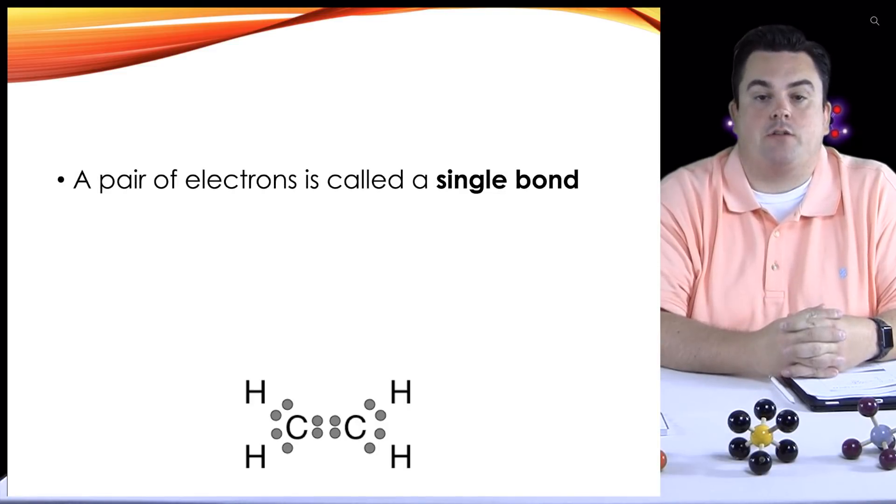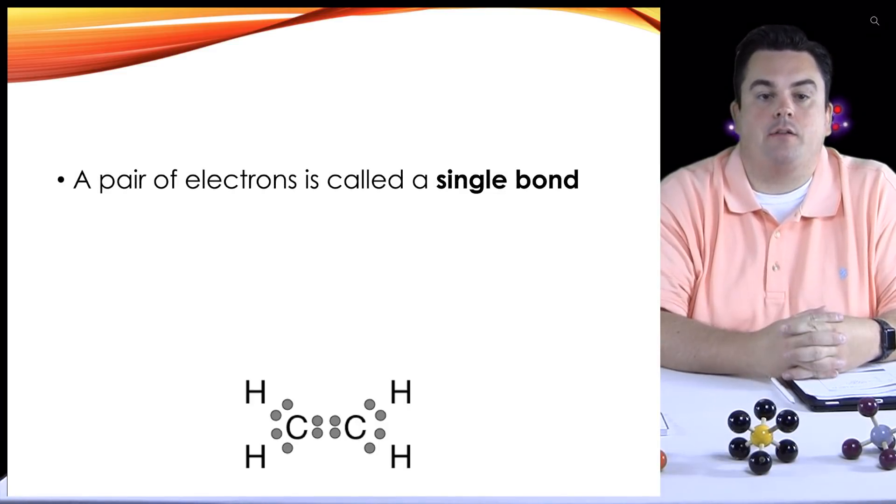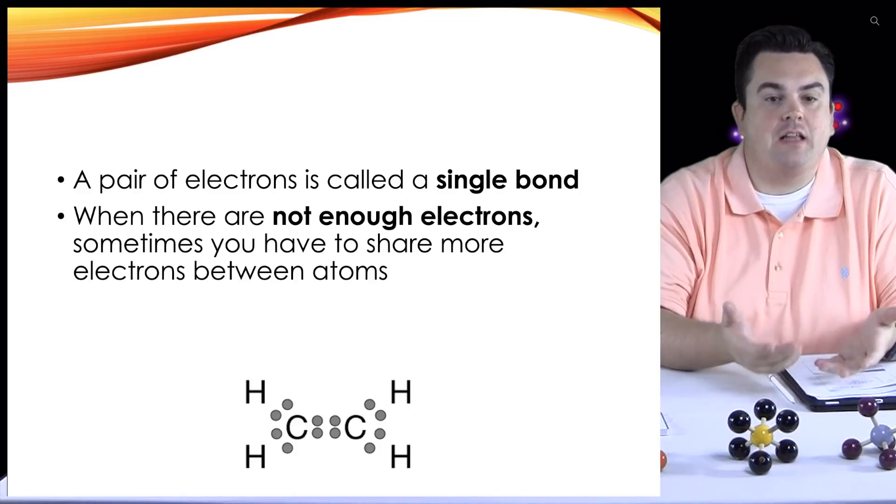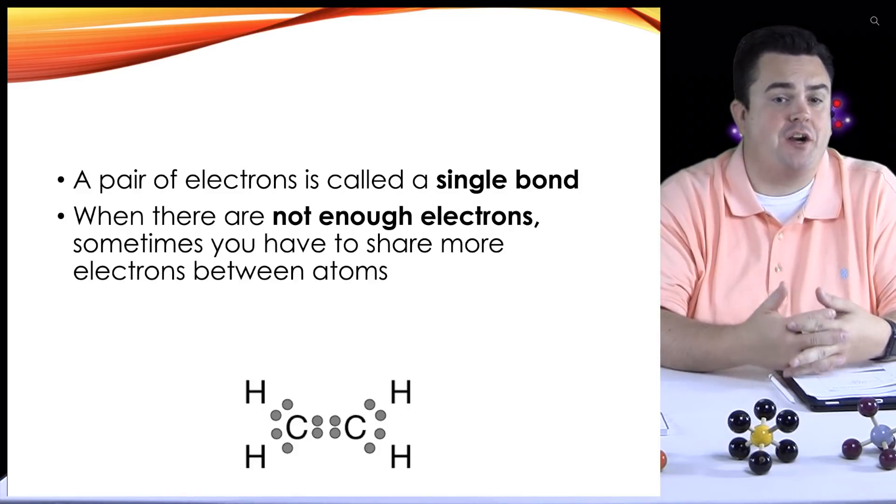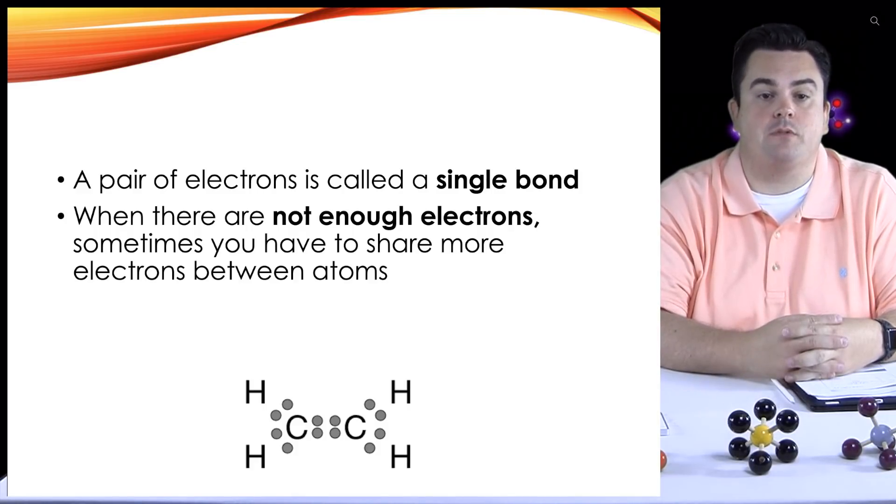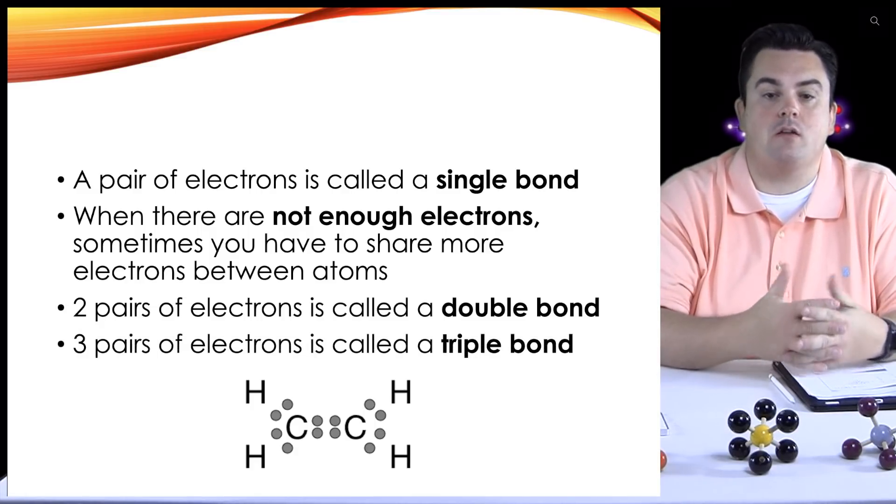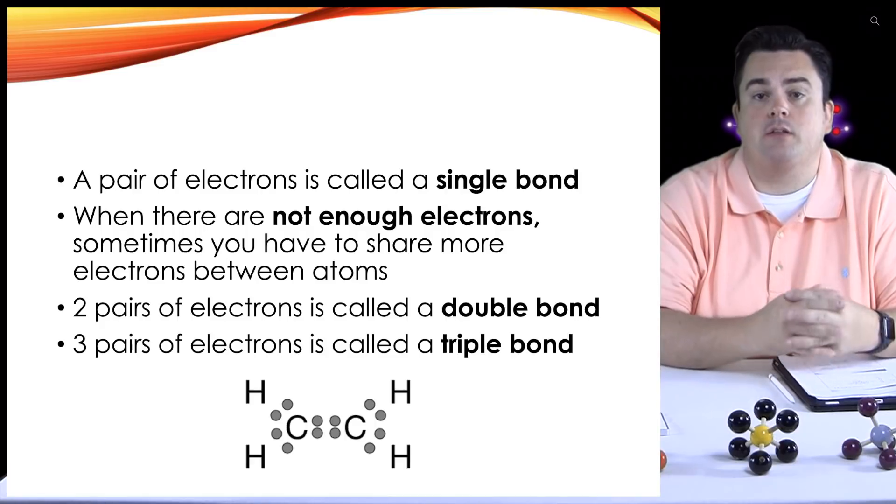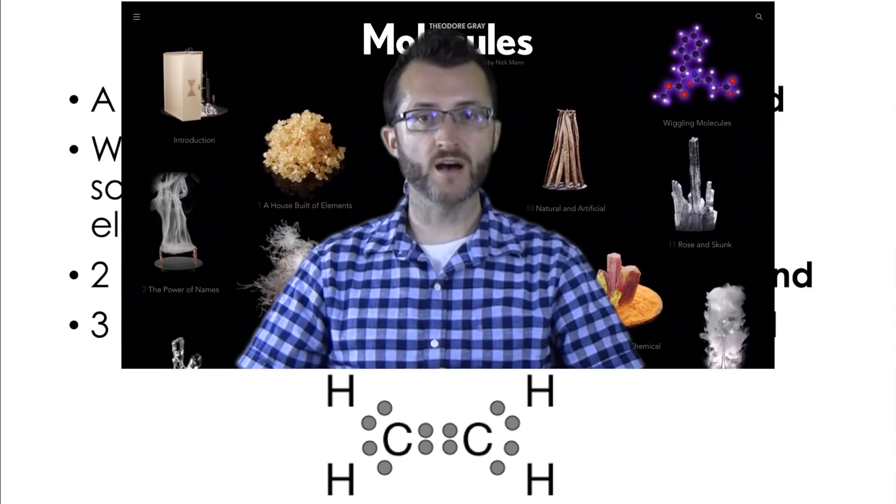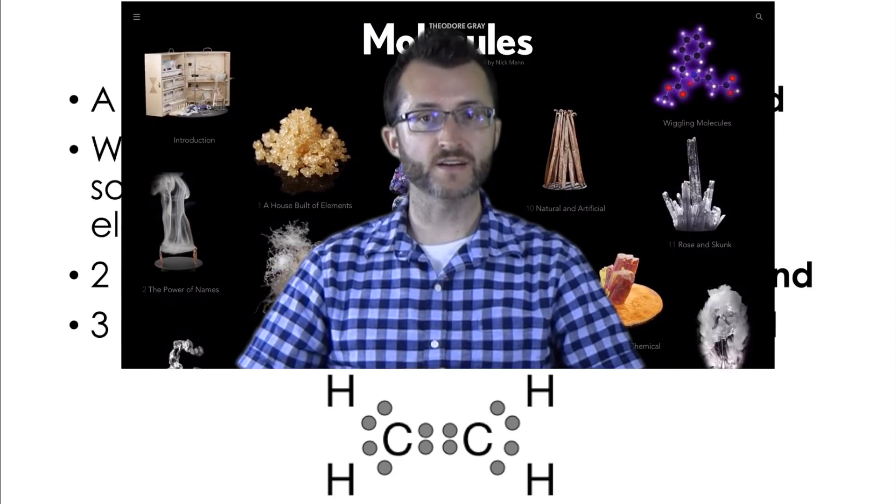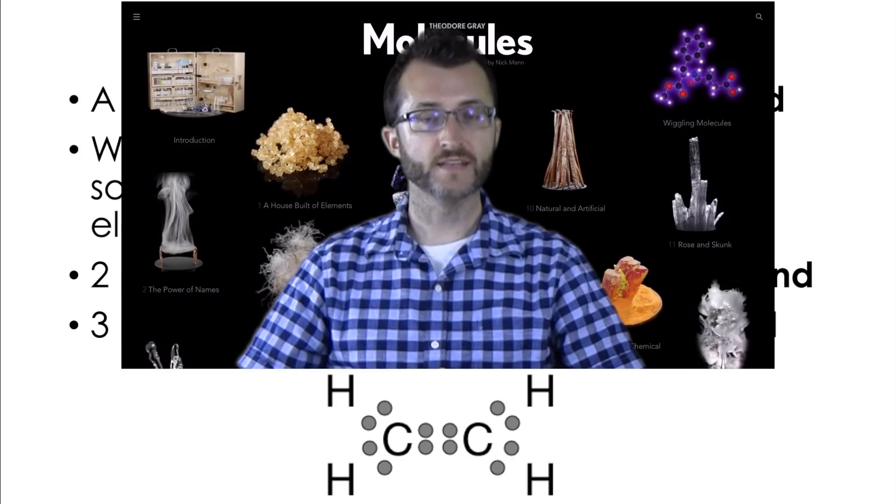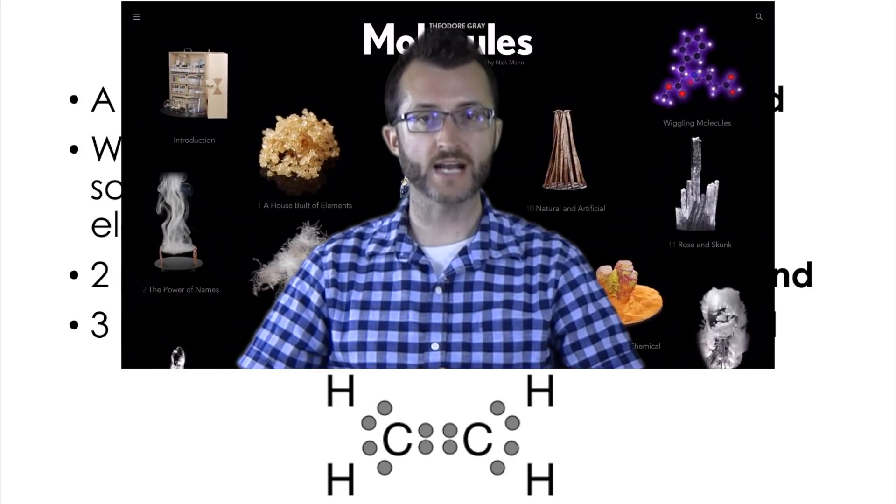A pair of electrons is called a single bond. When there are not enough electrons, sometimes you have to share more electrons between atoms. Two pairs of electrons is called a double bond. And three pairs of electrons is called a triple bond. Notice how in the picture below we see between the two carbons there are four electrons or two pairs. This means we have a double bond between the carbon atoms.